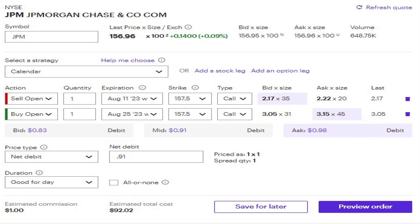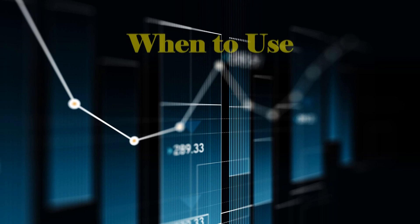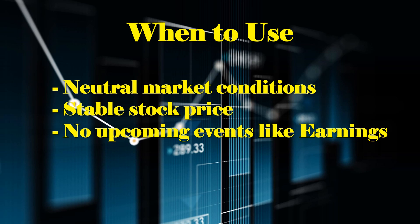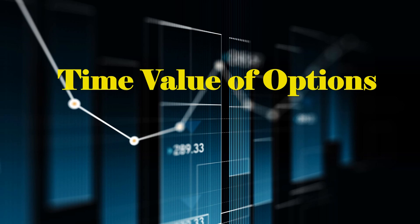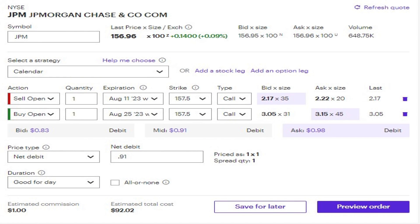The spread's total cost represents the maximum potential loss, while the potential profit is the difference in value between the two legs after the first one expires. Calendar spreads are typically used in neutral market conditions, when the underlying asset is expected to remain relatively stable in the short term. It's essential for the underlying asset's price not to experience significant movements during the life of the spread. Since the goal of a calendar spread is to profit from time and lack of volatility, the strike price should be as near as possible to the current stock price.